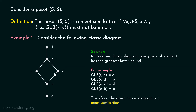You can see here that these are two unrelated elements and the greatest lower bound of c and d is actually b. So greatest lower bound does exist. Therefore, this Hasse diagram is a Meet Semilattice.